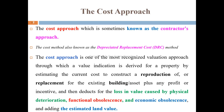Next, you consider the depreciation of the asset. Depreciation may be physical, functional, or economical. After accounting for depreciation, you can determine the value of the asset. The cost approach formula is: estimated replacement or reproduction cost, minus depreciation, plus building economy, plus estimated land value.